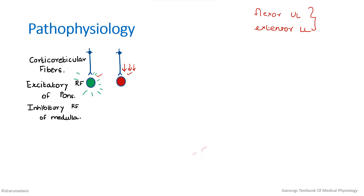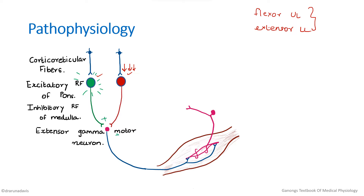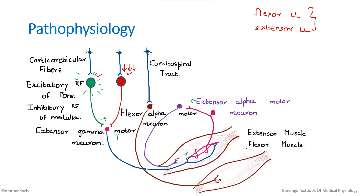The excitatory reticular formation in the pons is self-excited — it doesn't need external help to be activated. But the inhibitory area of the reticular formation needs constant support from the cortex to be activated. Fibers from the reticular formation synapse onto the extensor gamma motor neuron, which in turn innervates the muscle spindle of the extensor muscle. Via the gamma loop this indirectly activates the alpha motor group, maintaining constant tone in the extensor muscles.